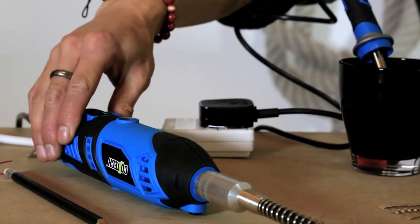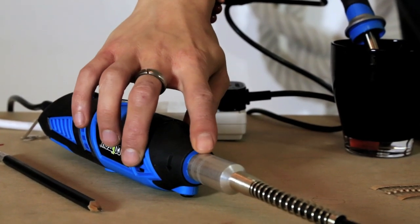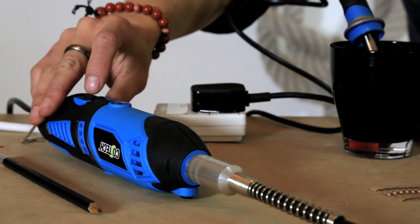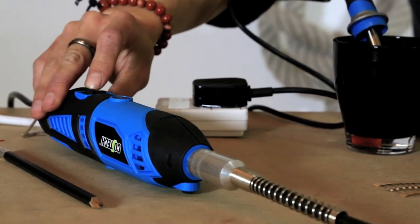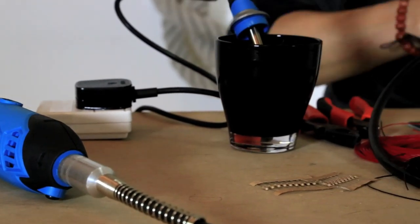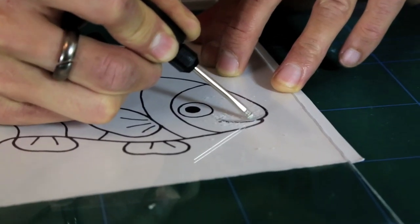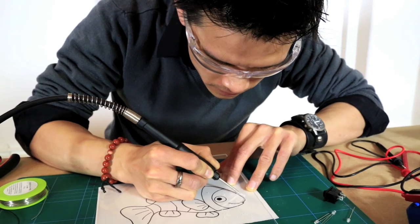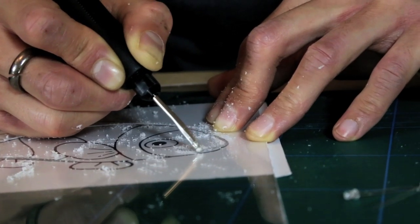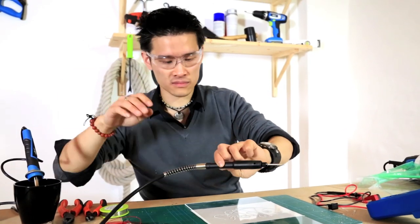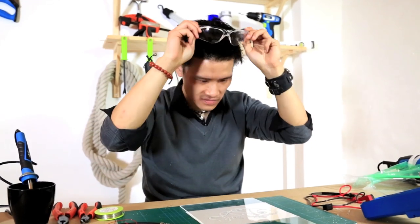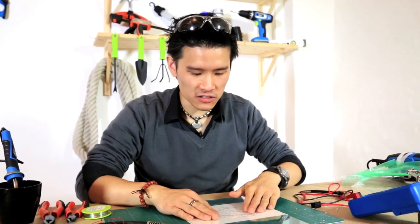So to do the engraving, we're going to use this mini grinder with a flexible shaft, set to a medium speed with an engraving bit. And that looks pretty good.